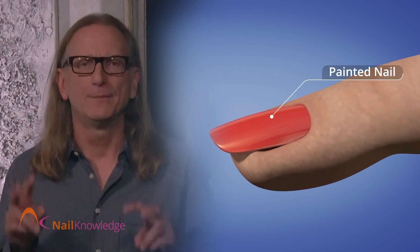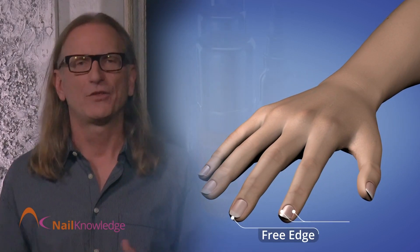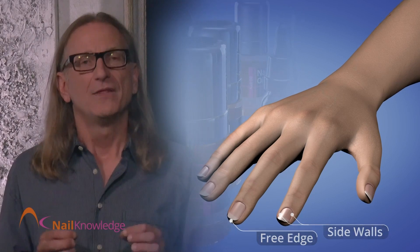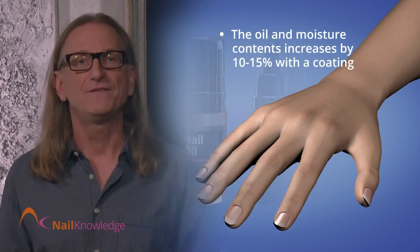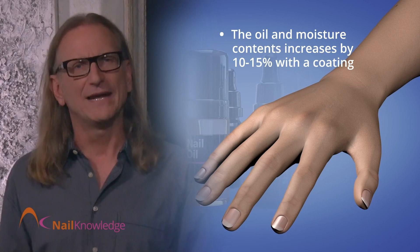They can still escape under the free edge and through the sidewalls. The nail plate's moisture content will increase by 10 to 15 percent and the oil content will increase slightly when the nails are coated with any kind of artificial coating.